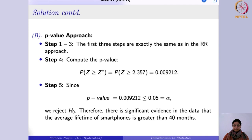In the last step, if someone tells you that alpha is 0.01 or anything else, you can easily compare it with the already-calculated p-value — unlike in the rejection region approach where you would have to recalculate the critical value. This was about the one-mean test when the standard deviation is known.